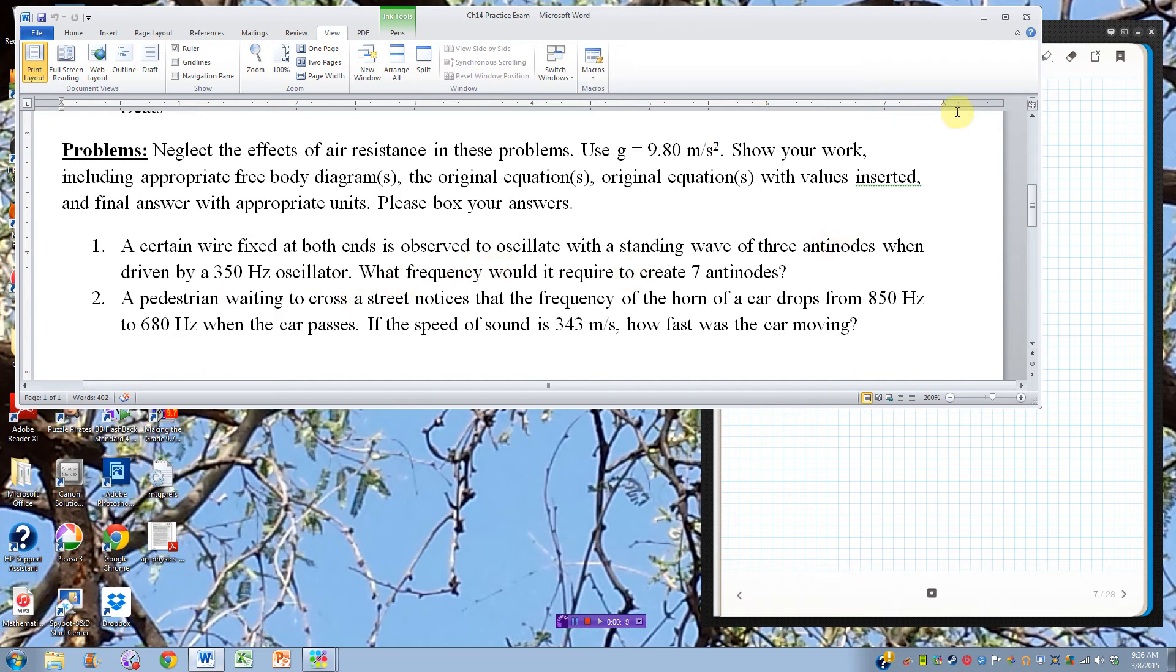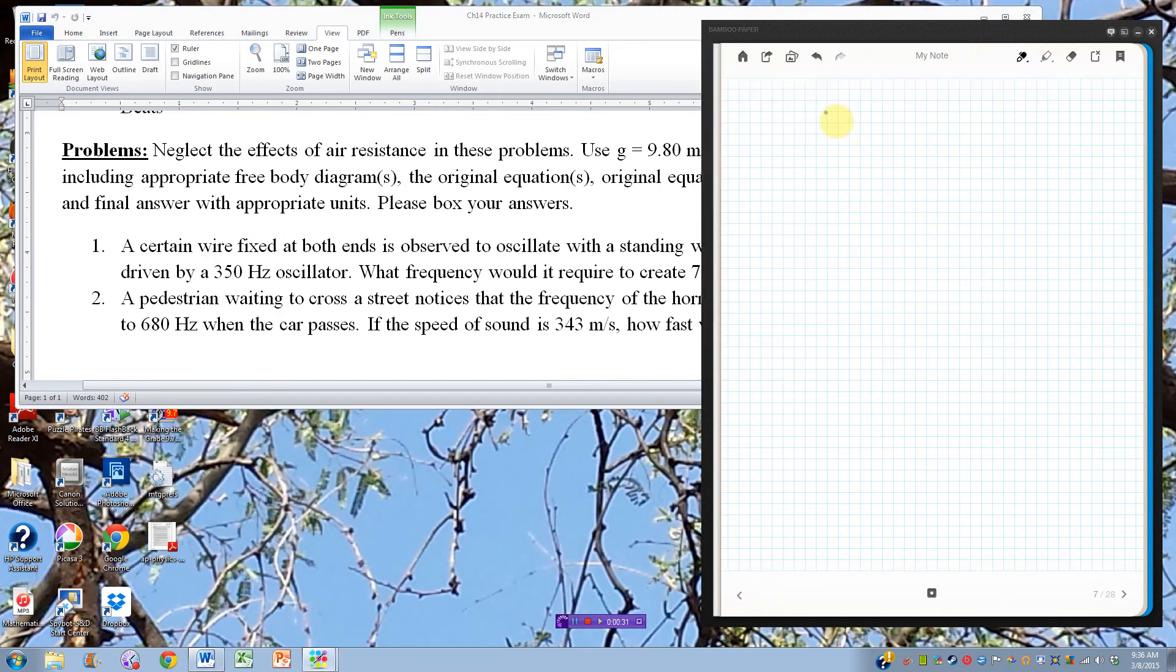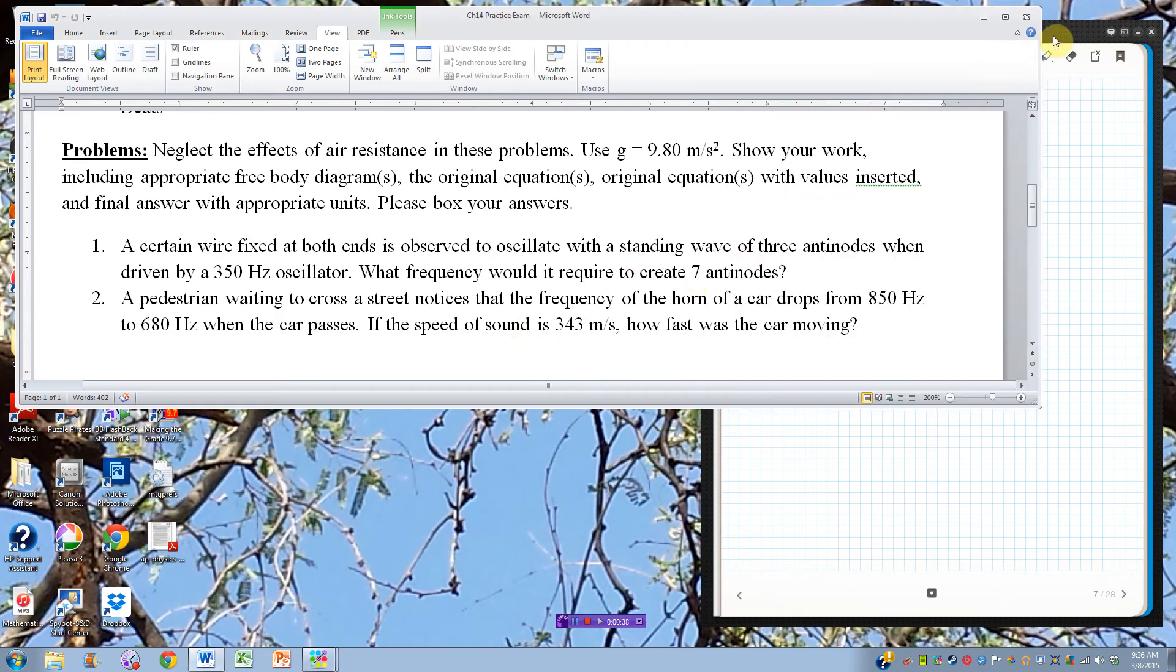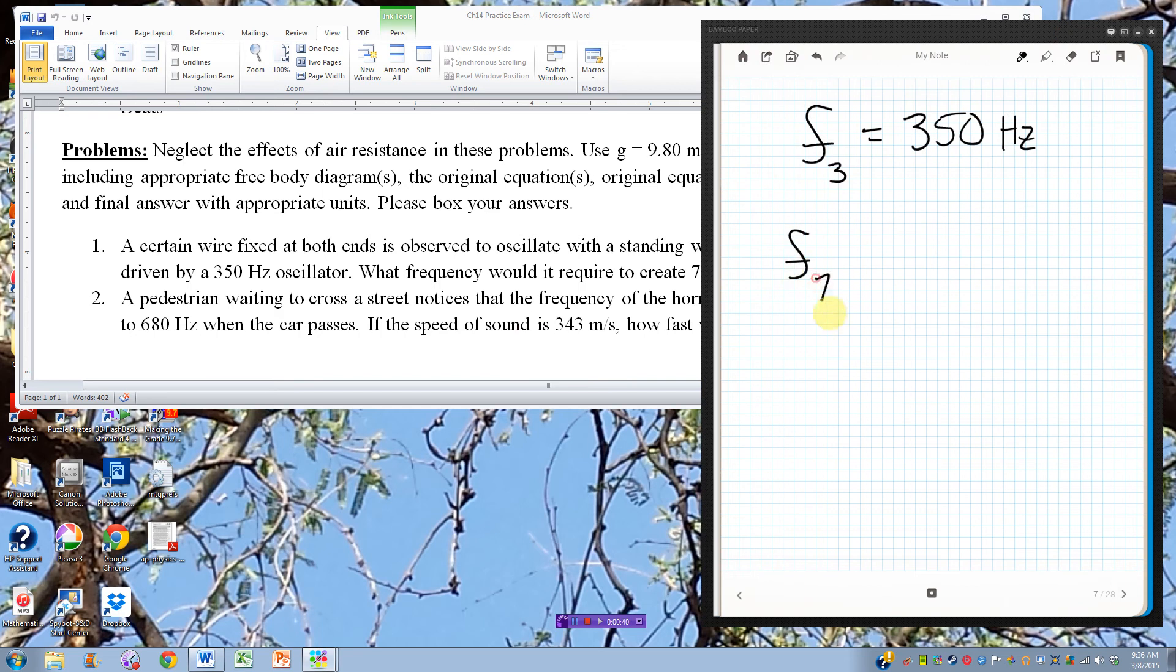The trick here is that the number of antinodes is equivalent to the number of the harmonic. So what we're really saying here is that the third harmonic is 350 hertz. So let's write that down. Third harmonic frequency is 350 hertz, and I want to know seven antinodes, so I want to know what is the seventh.